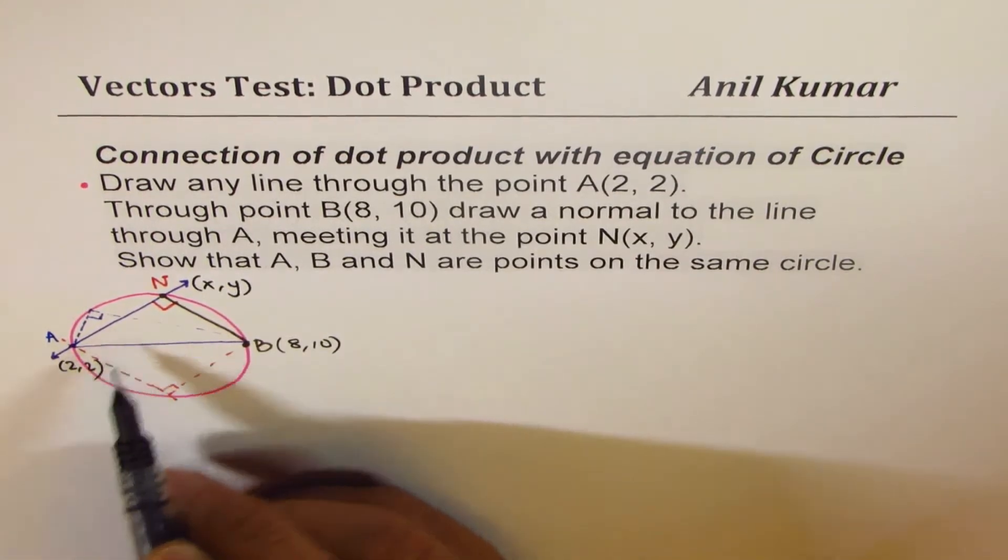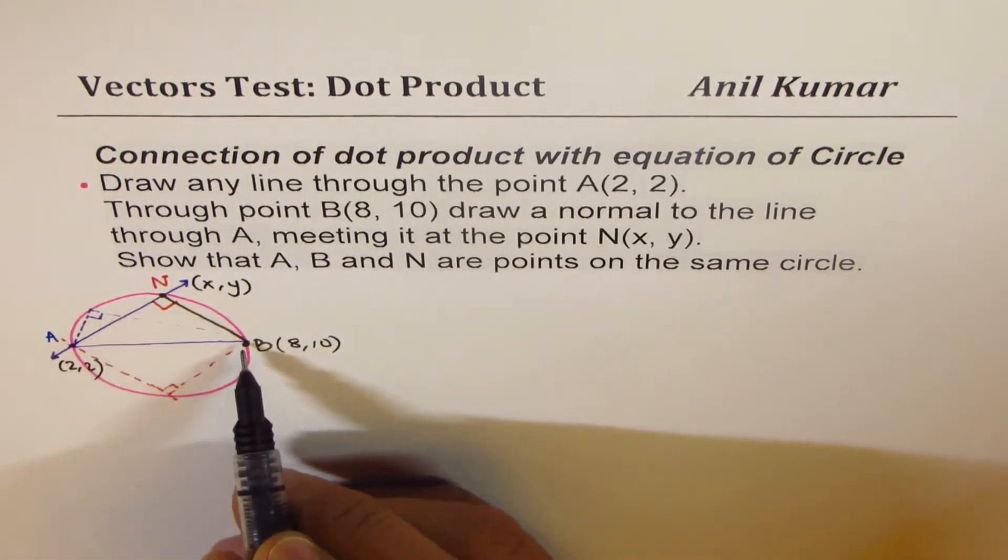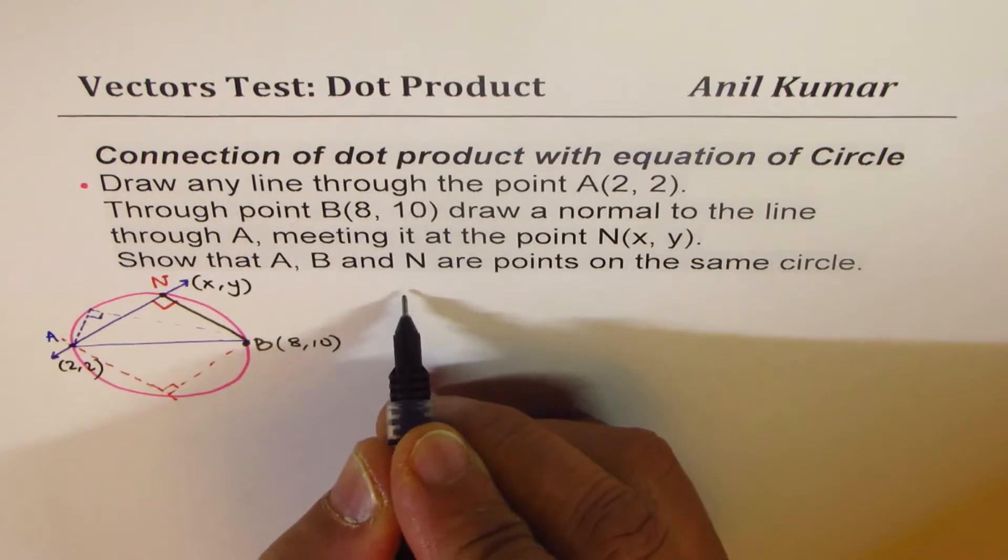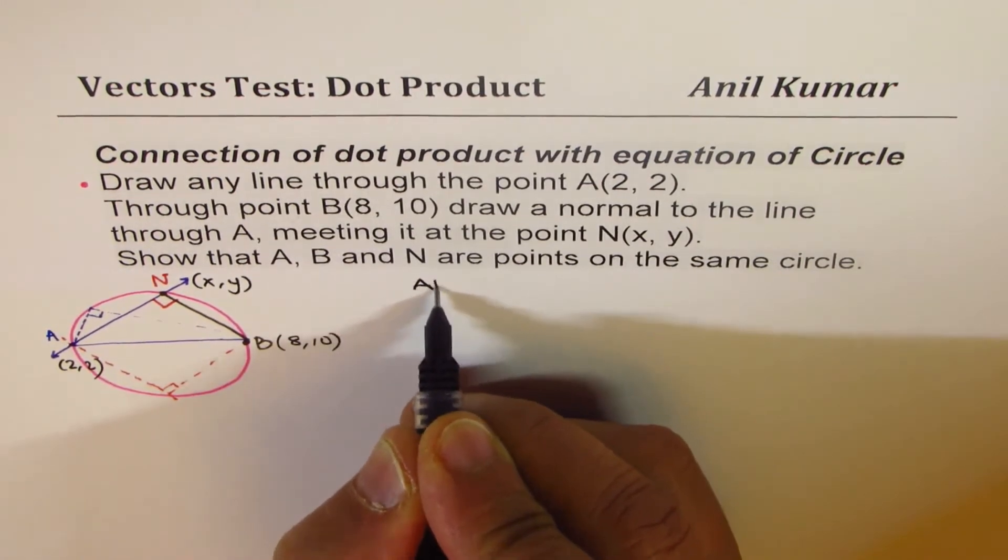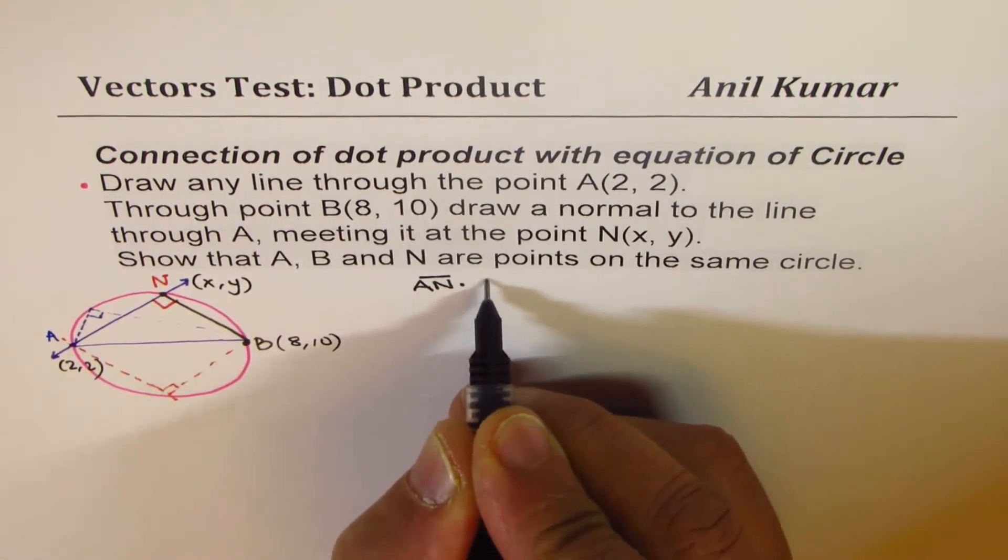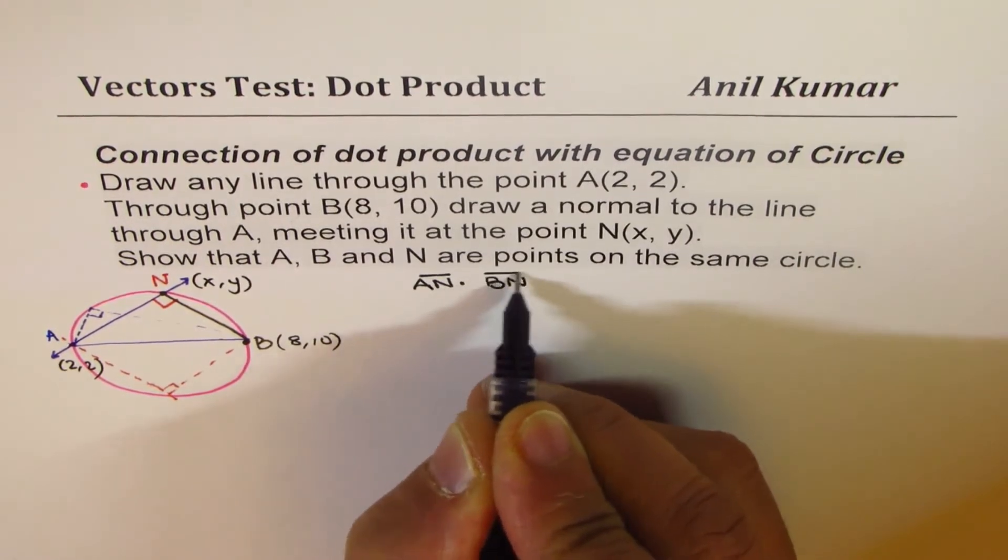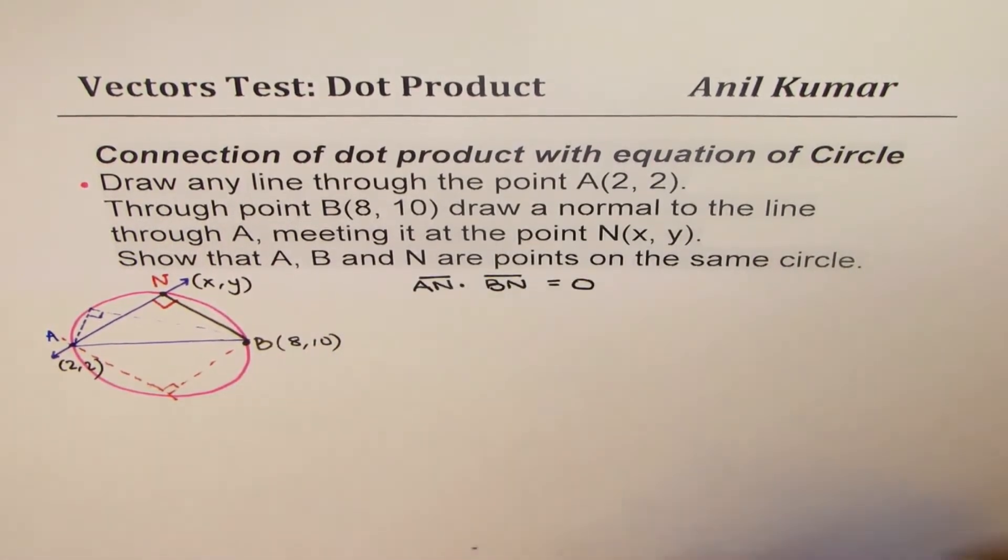Now from here, we know since these two are at right angles, therefore AN dot BN should be equal to 0. Perfect.